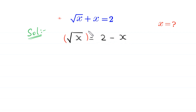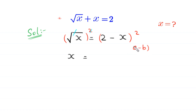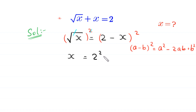From here, we take the square of both sides of this equation. The square will cancel out with the square root on the left side, leaving x equal to (2 minus x) squared. Using the algebraic identity, a minus b whole squared equals a squared minus 2ab plus b squared, so (2 minus x) squared becomes 2 squared minus 2 times 2 times x plus x squared.